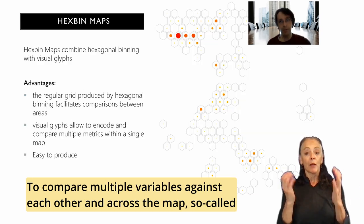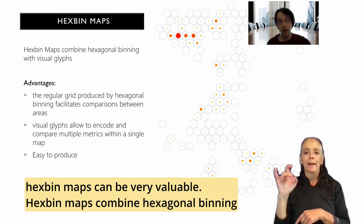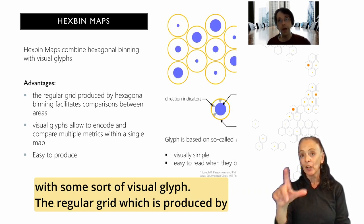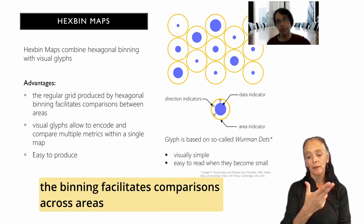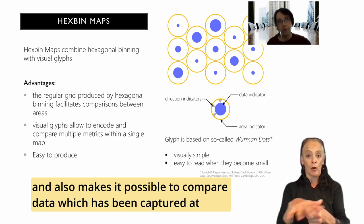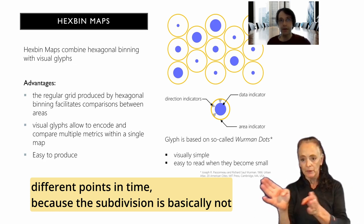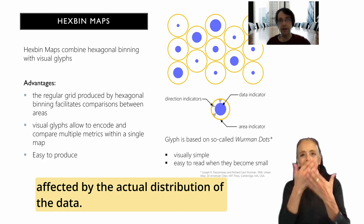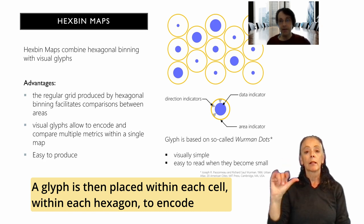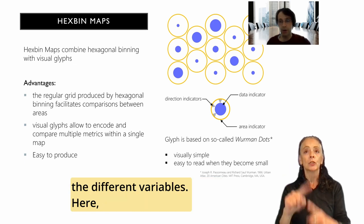To compare multiple variables against each other and across a map, so-called hexpin maps can be very valuable. Hexpin maps combine hexagonal binning with some sort of visual glyph. The regular grid, which is produced by the binning, facilitates comparisons across areas and also makes it possible to compare data which has been captured at different points in time, because the subdivision is basically not affected by the actual distribution of the data. A glyph is then placed within each cell, within each hexagon, to encode the different variables.